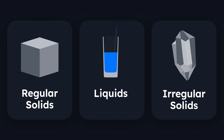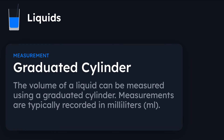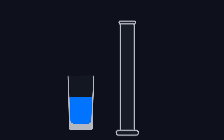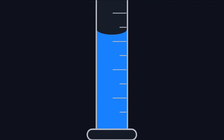Liquids are different. We can't really measure the length, width, and height of a liquid, so we need to use a tool called a graduated cylinder. The volume of a liquid can be measured using a graduated cylinder, and measurements are typically recorded in units called milliliters. It's a tall and narrow column with measurements along the side that vary depending on the graduated cylinder — they might be 1, 5, 10, or 0.5 milliliters. You would simply pour your liquid in and make a measurement.